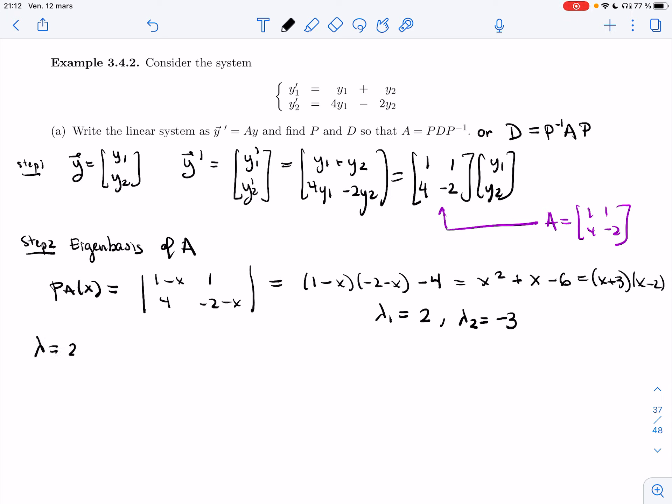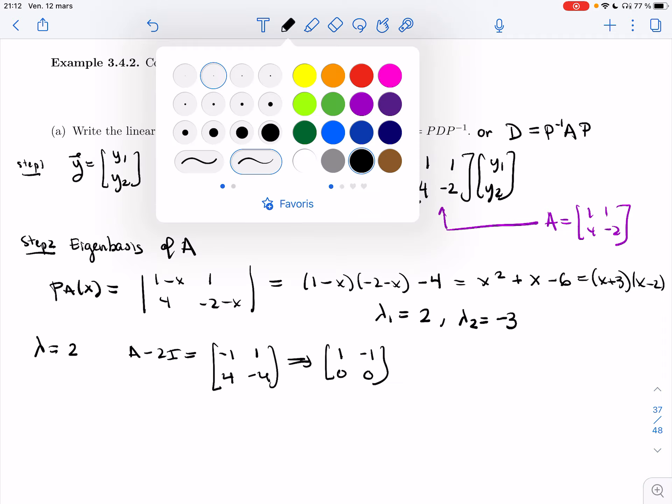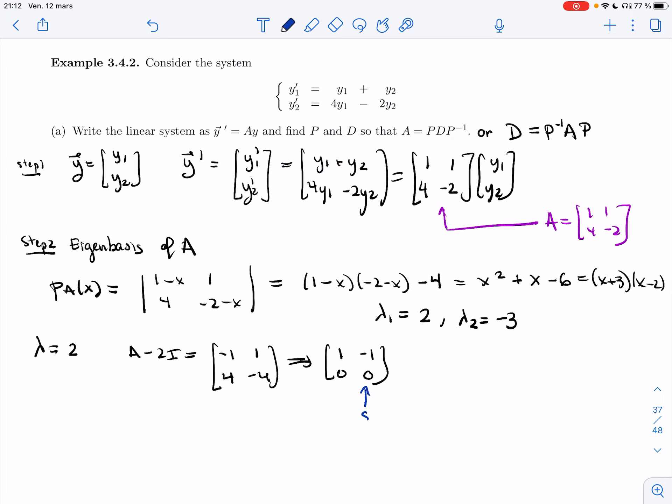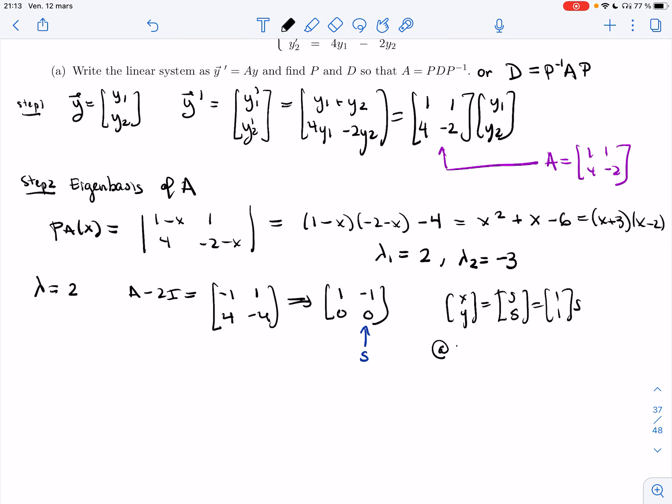All right, so let's find what we have at 2. So we're looking for A minus 2I. That's going to be minus 1, 1, 4, minus 4. I reduce. I get 1 minus 1, 0, 0. So this is s. I get x, y, x is s. Y is s as well. So that's 1, 1. So my first vector for my basis will be 1, 1.